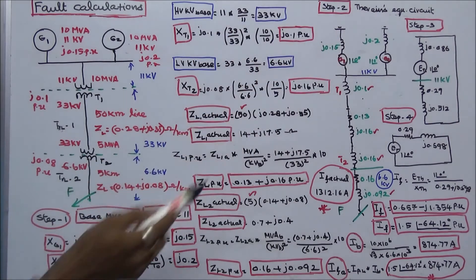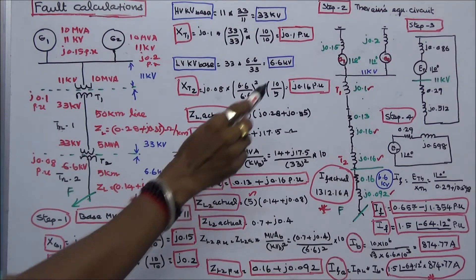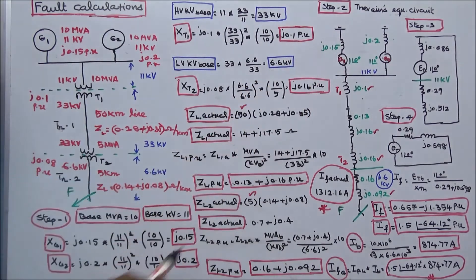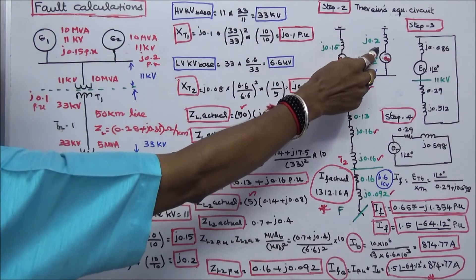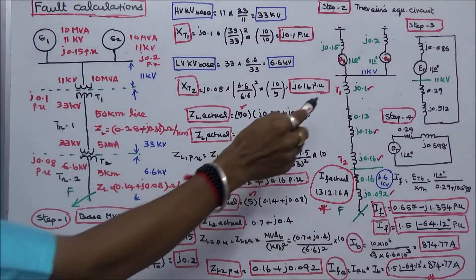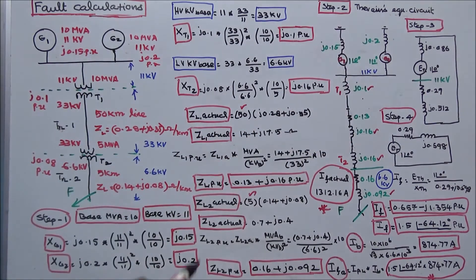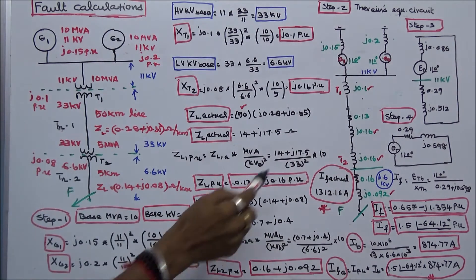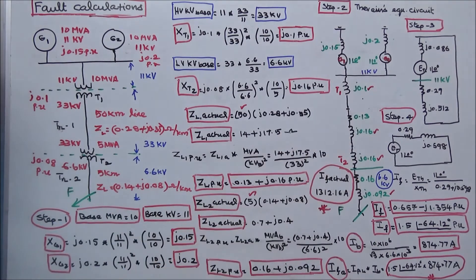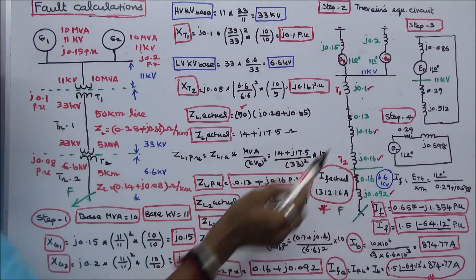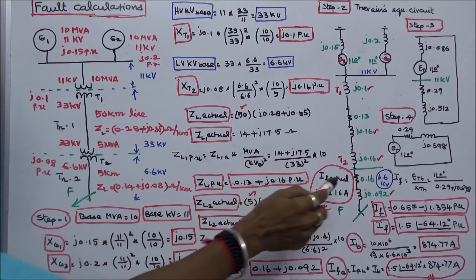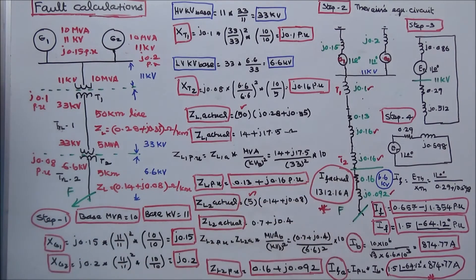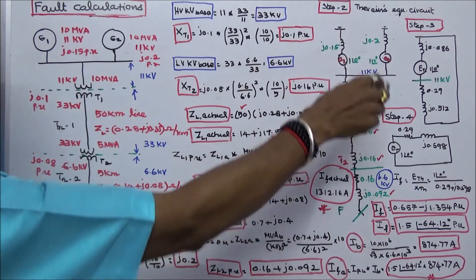In the second step, I draw the Thevenin equivalent circuit. Generator 1 reactance is j0.15, Generator 2 reactance is j0.2, Transformer 1 reactance is j0.1, Transmission Line 1 has resistance 0.13 and reactance j0.16, Transformer 2 reactance is j0.16, and Transmission Line 2 has resistance 0.16 and reactance j0.092.